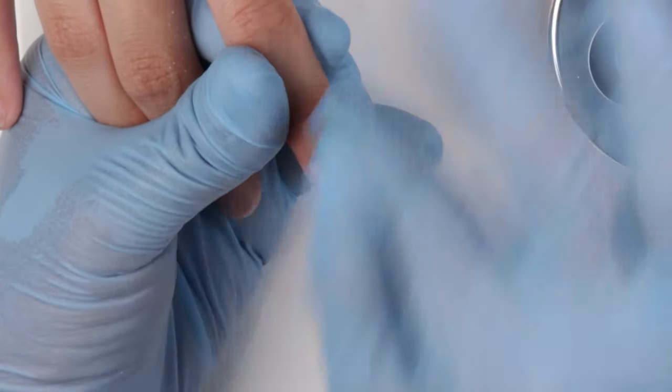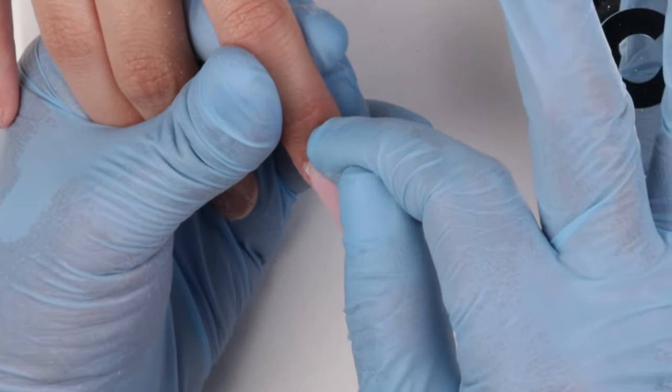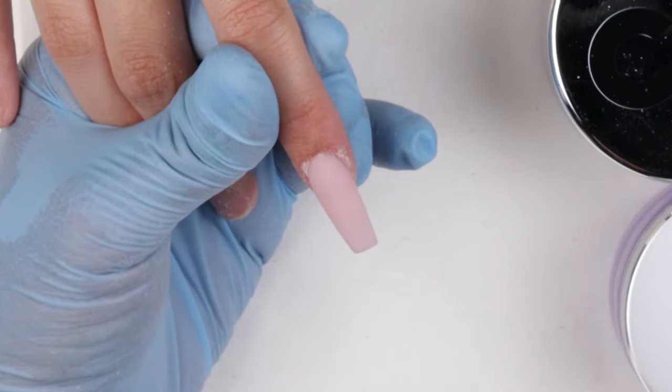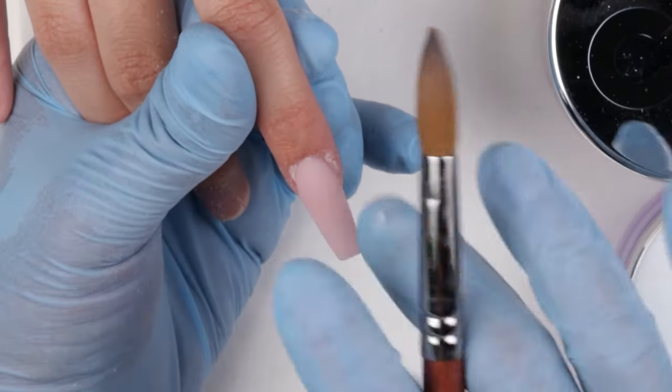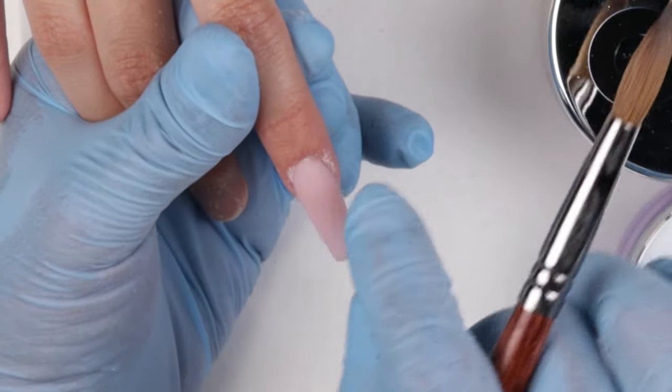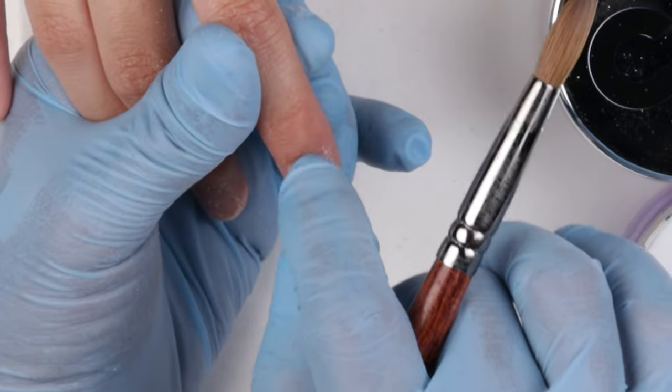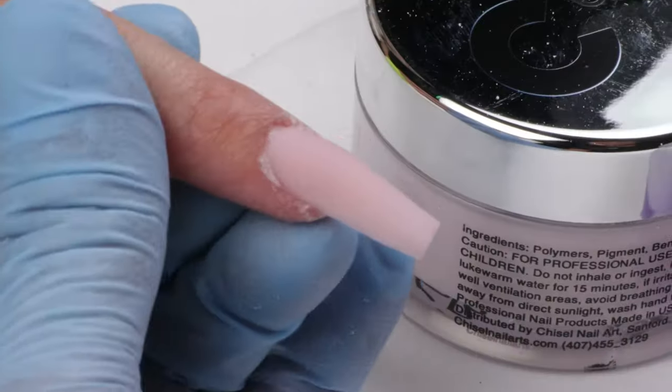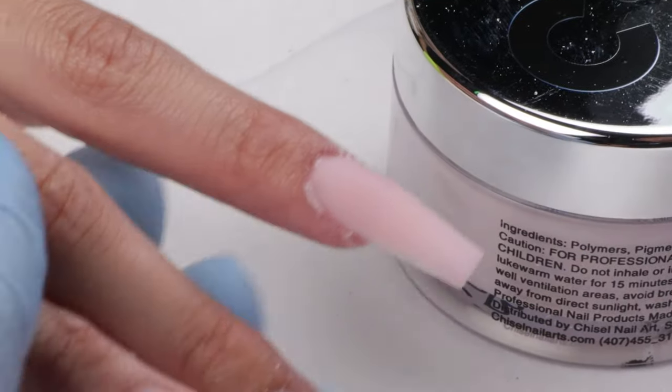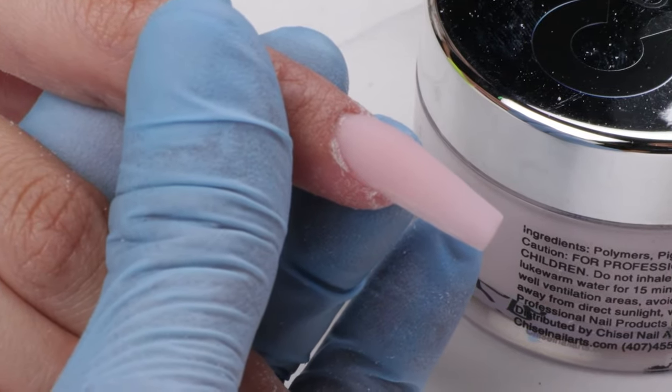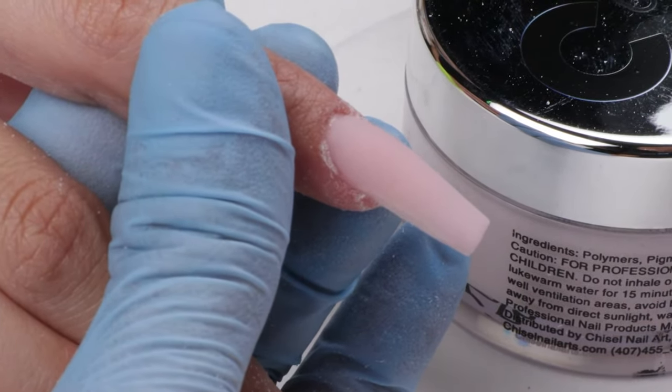Because what happens is when you over apply the acrylic it sticks to the cuticle, and when a lot of people have a habit of rubbing a lot of liquid into the cuticle, there's a bit of the acrylic that's always going to stay there and that's what you don't want when you apply the one ball method that I'm trying to teach.